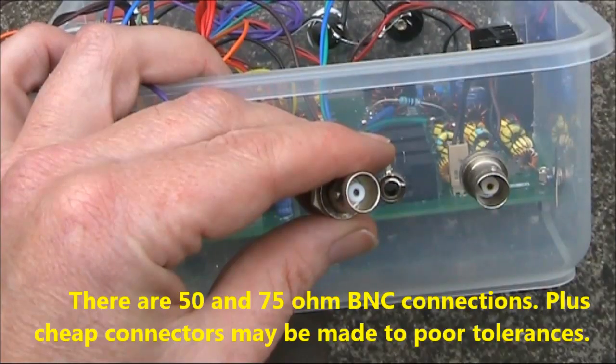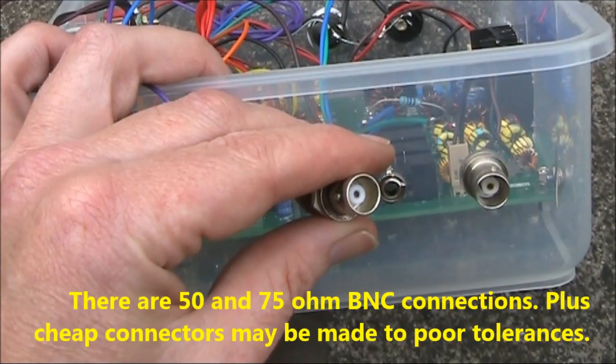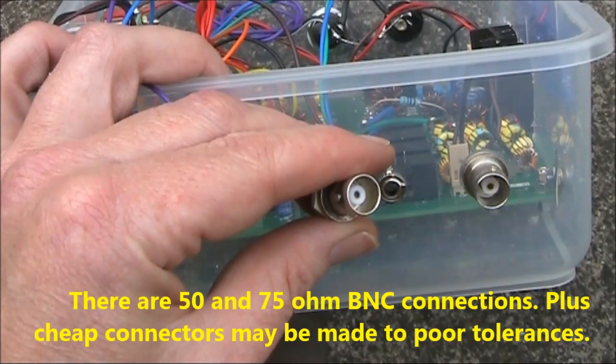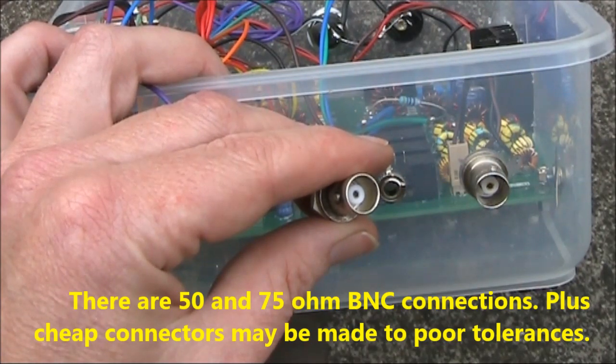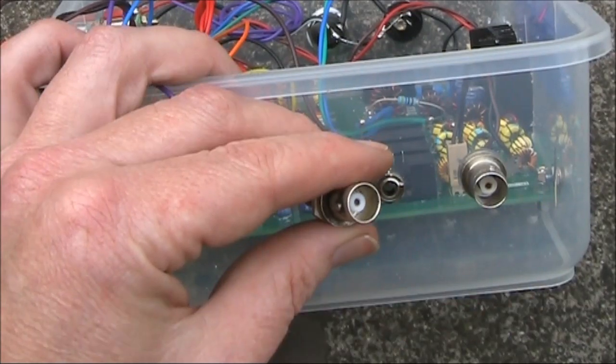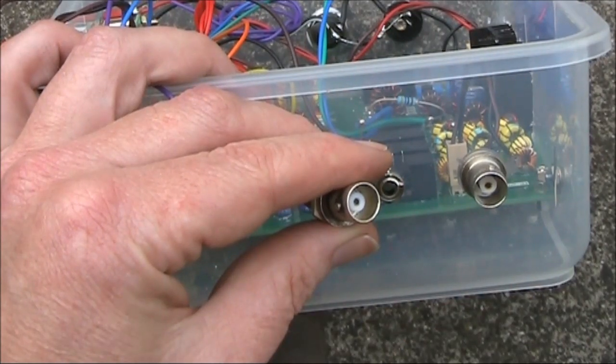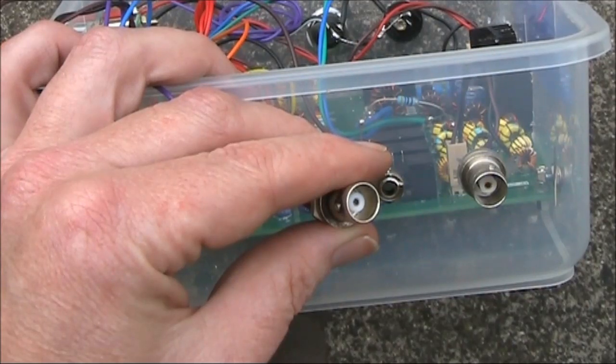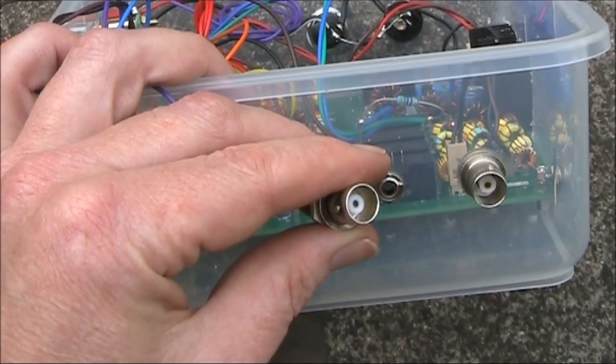The lesson is that, although it may be hard to tell visually, there are differences between BNC sockets. They can sometimes make a connection unreliable. Don't always blame your plug. If you've got an unreliable connection, have a look very carefully at the center and try to measure its size. You may find that it's unsuitable for the plug that you're using with it.